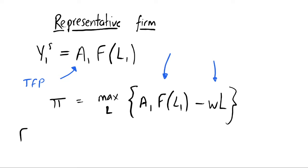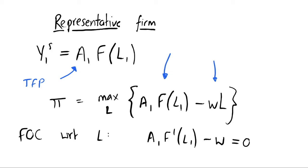Our maximization problem is to maximize output minus costs of production. We solve this by taking a first order condition with respect to labor supply, our only choice variable. This gives us A1 multiplied by the derivative of the production function with respect to labor, minus w, equals zero. Rearranging — adding w to both sides — we get A1 times the derivative of the production function equals w.